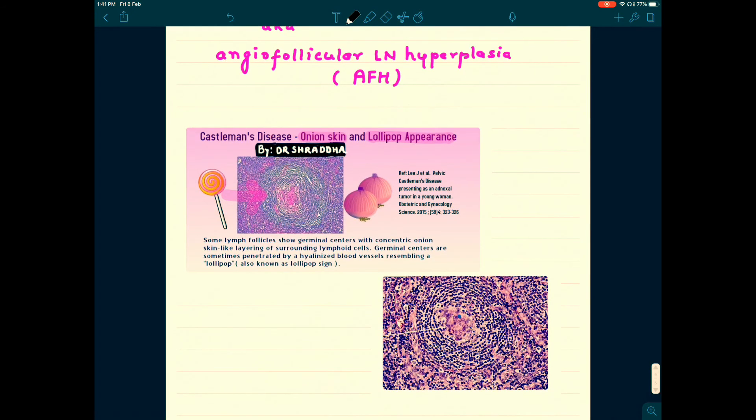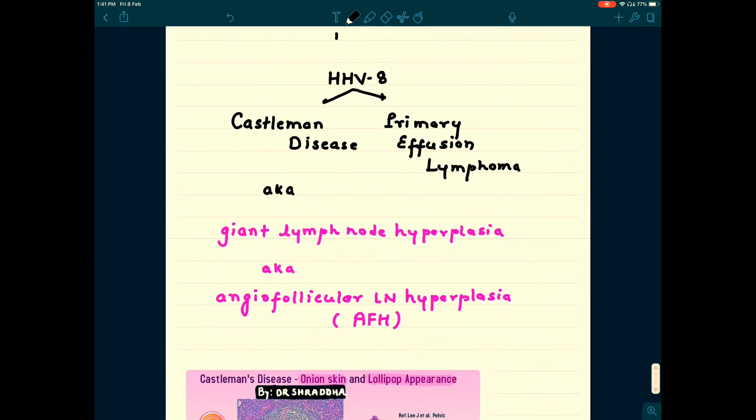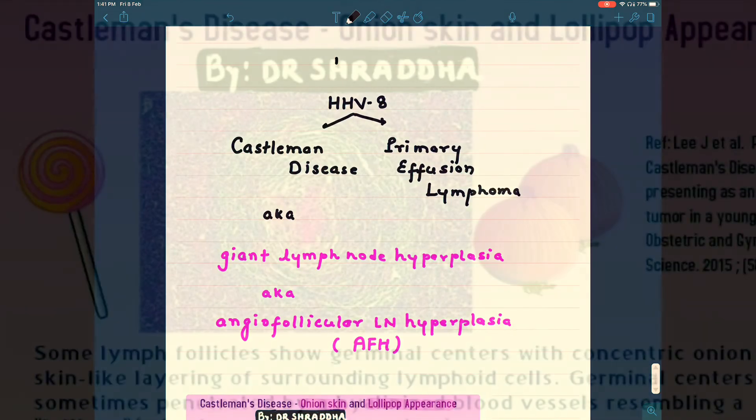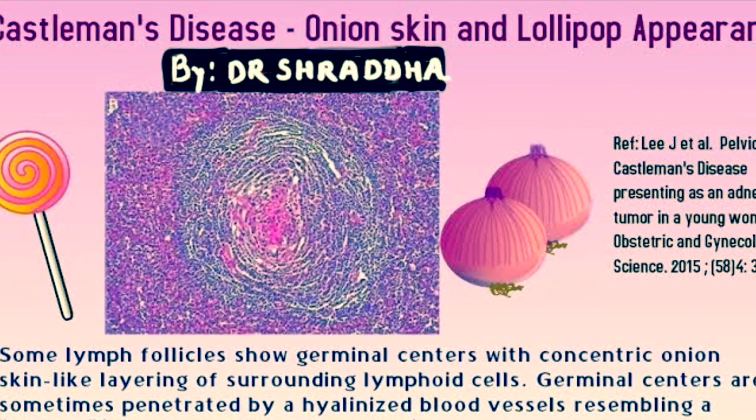And other disease of HHV8 is Castleman disease which gives lollipop appearance in a lymph node.